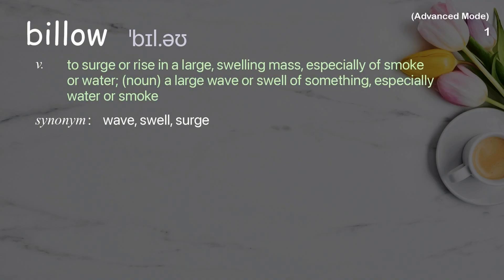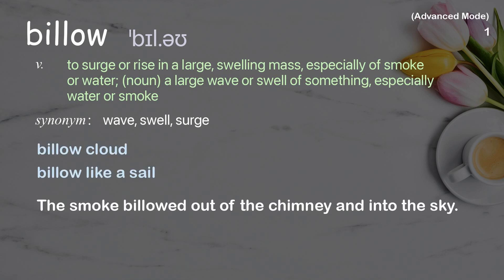Billow. To surge or rise in a large, swelling mass, especially of smoke or water. Noun: a large wave or swell of something, especially water or smoke. Examples: billow cloud; billow like a sail. The smoke billowed out of the chimney and into the sky.